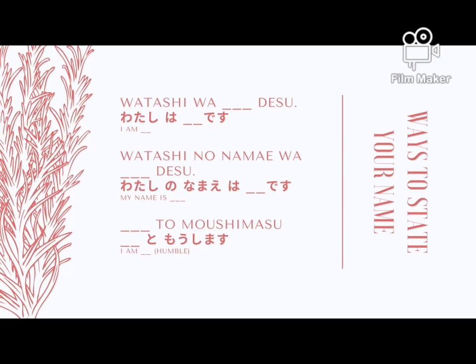There are three ways to state your name in Japanese. First, 'I am' — Watashi wa [name] desu. Second, 'My name is' — Watashi no namae wa [name] desu. Or the humble style, 'I am' — [name] to moushimasu. For example: Watashi wa Emiri desu. Watashi no namae wa Emiri desu. Emiri to moushimasu.